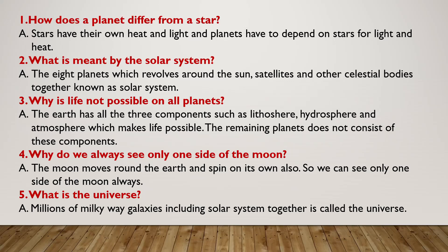What is meant by the solar system? The Sun, the eight planets which revolve around the Sun, the Moon, satellites, and other celestial bodies together are known as the solar system.